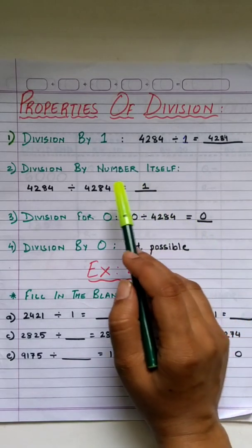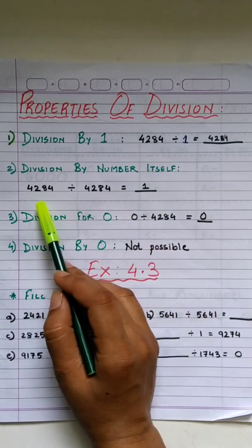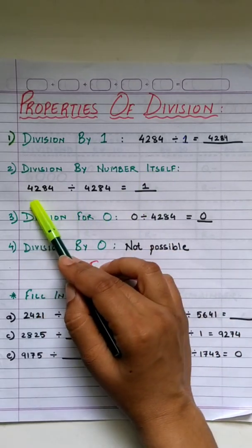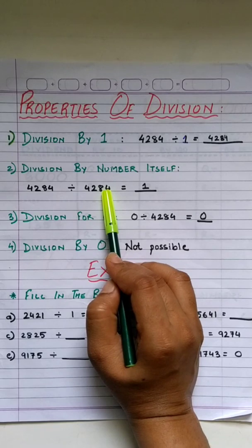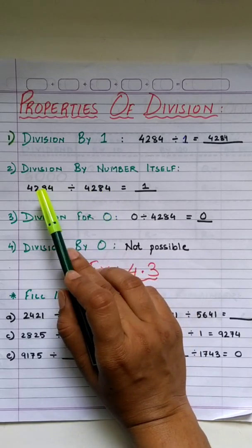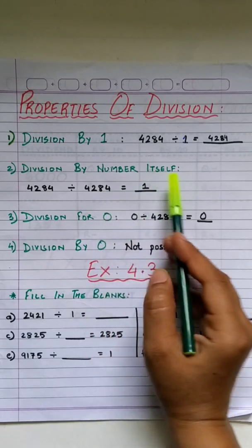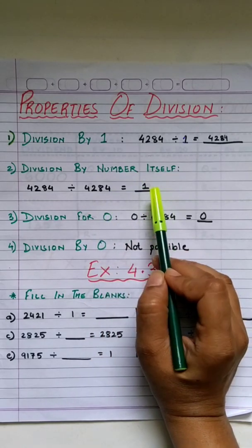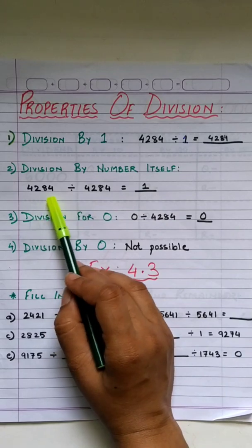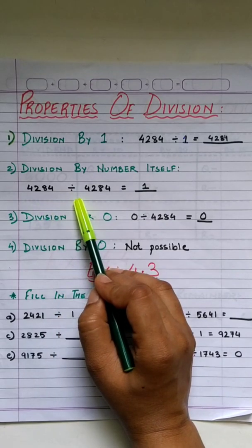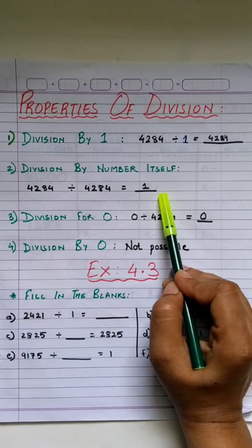Next property: when a number is divided by itself, we get 1 as the quotient. For example, 4,284 divided by 4,284 gives 1.